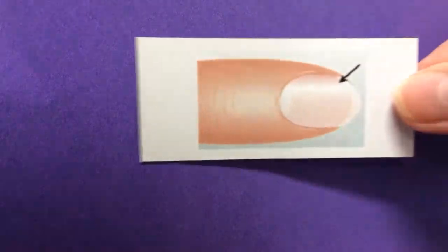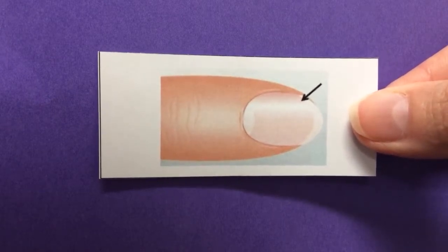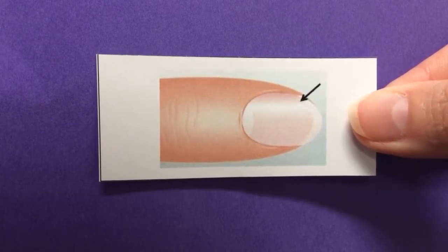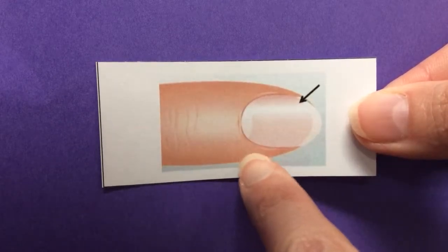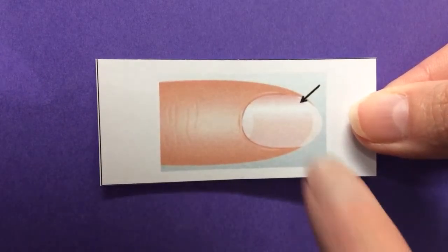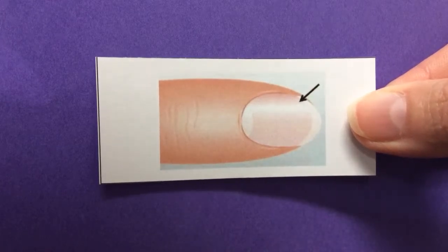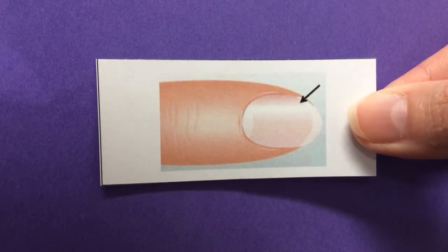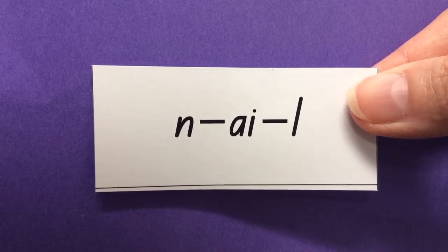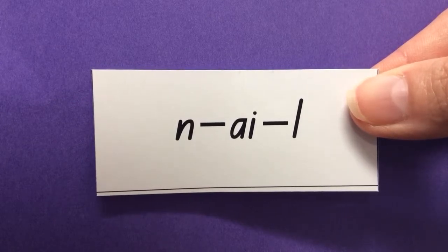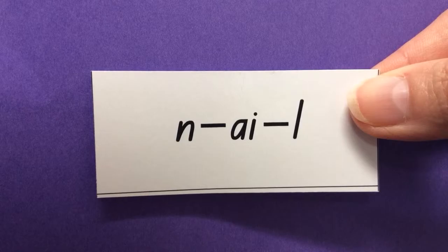Next one is nail. Nail. There's my nail, right there. Same as this nail. Lots of nails. Nail. It's a fingernail. How did you go? Nail. Good.